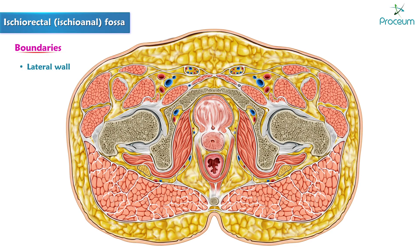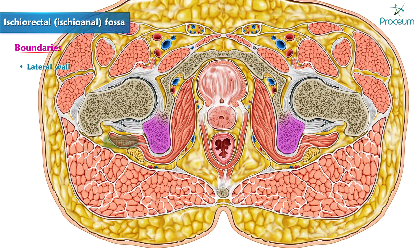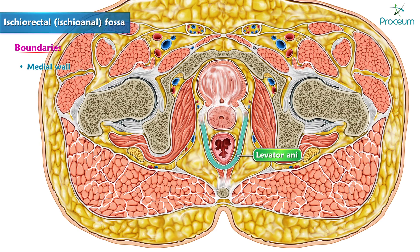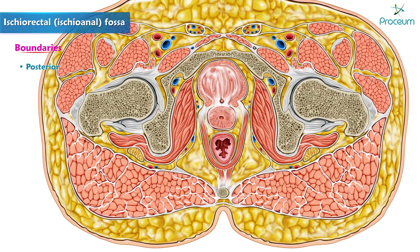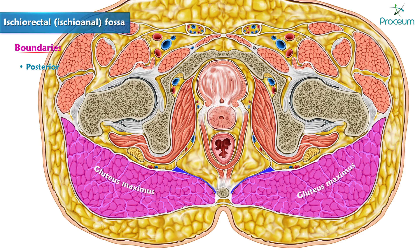The lateral wall of each fossa is formed by the ischium and obturator internus muscle. The medial wall is the levator ani muscle and the external anal sphincter. Posteriorly, it is bounded by the sacrotuberous ligament, on the posterior surface of which is the gluteus maximus.